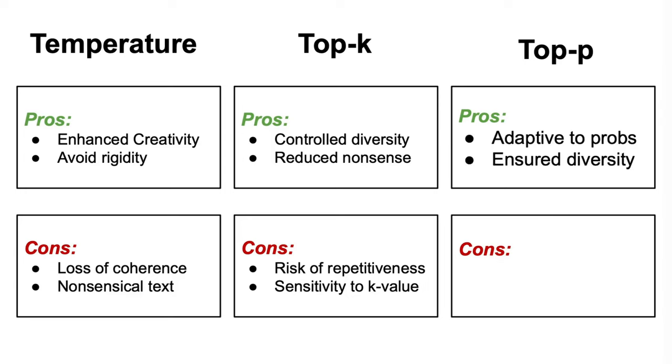Finally, the pros of enabling top-p sampling is firstly that it dynamically adjusts the set size based on probabilities, providing a balance between exploration and exploitation, and secondly that it allows for a controlled level of randomness while ensuring a diverse set of chosen words.